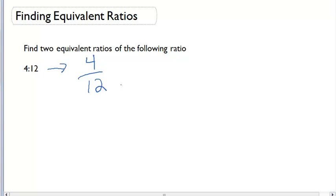When I'm looking for equivalent ratios, I'm also looking for equivalent fractions. The first thing I can do is multiply both the numerator and the denominator by 2. This is going to give me a new fraction of 8 over 24, or if I were to write this as a ratio, 8 to 24.